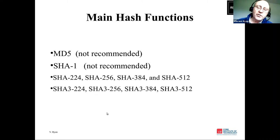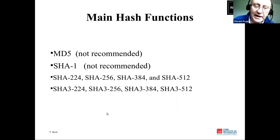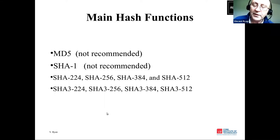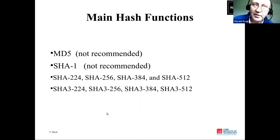The main hash functions: MD5 — not recommended; SHA-1 — not recommended. Then SHA-224 gives a 224-bit hash, SHA-256 gives a 256-bit hash, and so on. There's also SHA-3 in variants of 224, 256, 384, and 512 bits, which is the most modern. All these SHA algorithms are already approved by NIST.